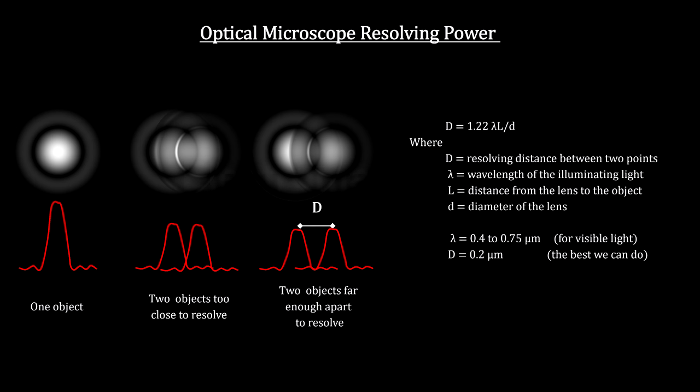Light starts out quantized, as demonstrated by black body radiation, and is absorbed quantized, as demonstrated by the photoelectric effect. So it stood to reason that it travels quantized as well. In other words, it's a particle, not a wave. But what about the earlier proof that light was a wave?